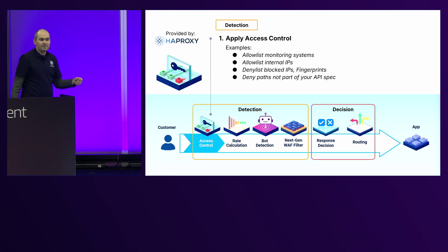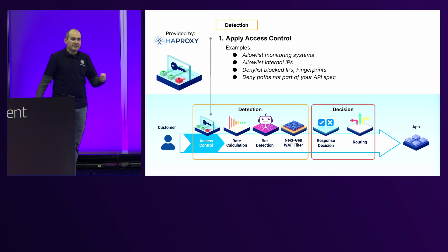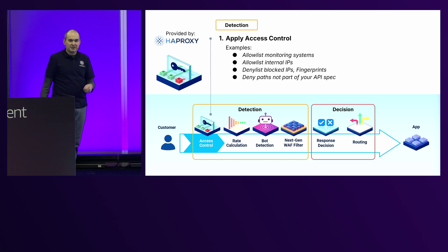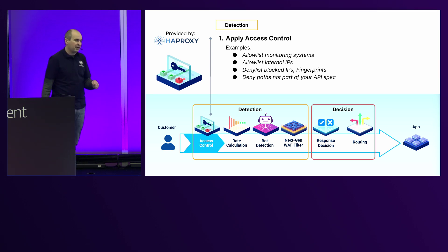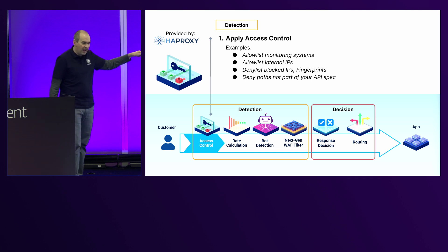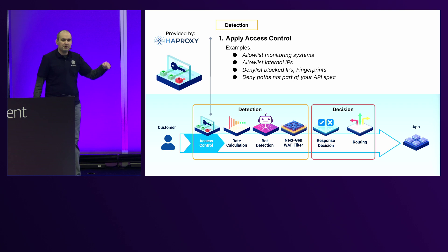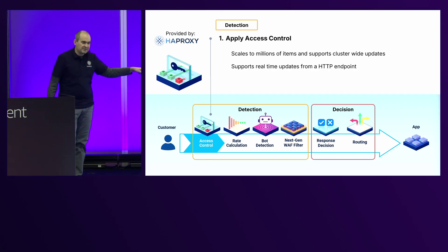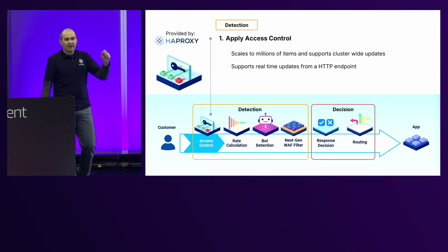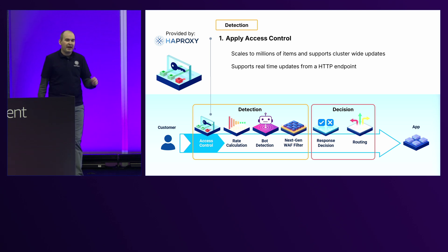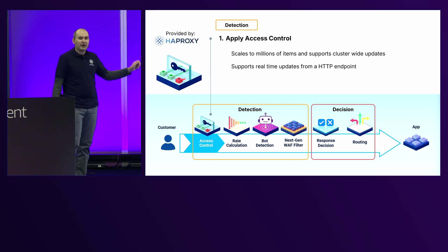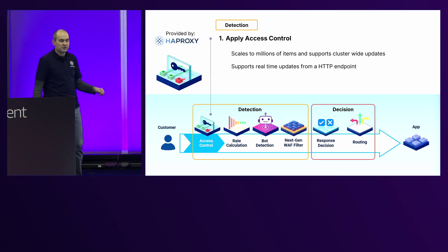The first layer is access control — it's actually very simple. It's a deny list and allow list. Should I deny this IP address? Should I allow internal traffic? Should I deny this JA3 fingerprint because that's a bot I've seen? What's important is we do it really fast by allowing a list of millions of IP addresses in a single list and very quickly deciding whether to allow that or not.